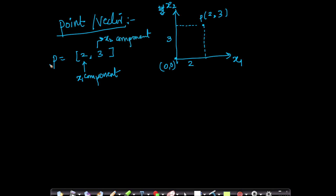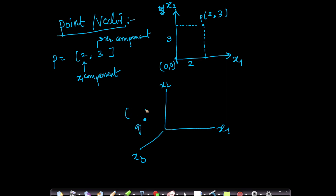Now, what if I want to represent a point in three-dimensional space? I have x1 axis, x2 axis, and x3 axis. Suppose there is a point here — this point Q can be represented using a vector of size 3. Let us assume it is two units away from x1, three units away from x2, and five units away from x3. A three-dimensional point can be represented with a vector of size 3, with each component corresponding to how far away it is from the origin on that axis.